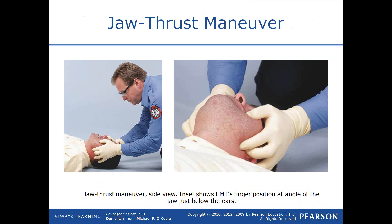The jaw thrust maneuver is more challenging and is used when a patient has spinal cord injury or you suspect it based on the mechanism — for example, an unresponsive patient removed from a motor vehicle where the windshield was starred. That starred windshield may have been caused by the patient's head, indicating a possible spinal cord injury. We don't want to hyperextend the neck, so instead we place our thumbs on the cheekbones, use our fingers to grab the jaw by the ear, and lift the jaw upward.